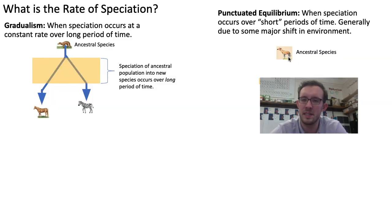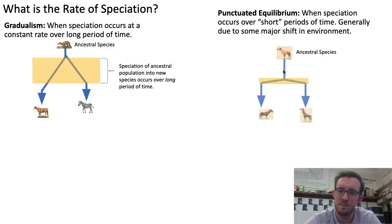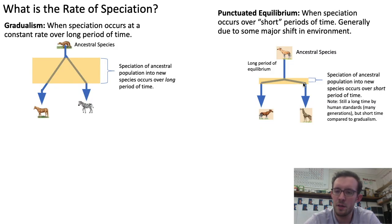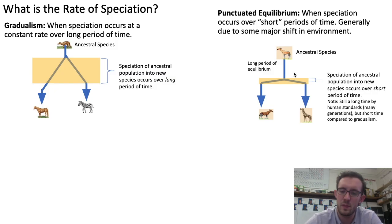To show an example of punctuated equilibrium, here we've got a separate ancestral species. What you can observe happening in this model of speciation is that there's a long period of equilibrium in which the ancestral species doesn't change much at all. But that equilibrium is punctuated by a very short period of divergence — speciation into two new species occurs over a relatively short period of time. And after the speciation occurs, there would be more long periods of equilibrium in which no divergence is occurring.